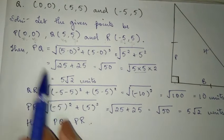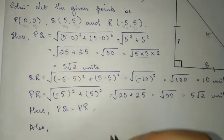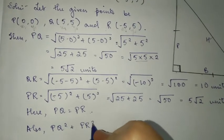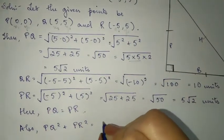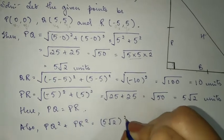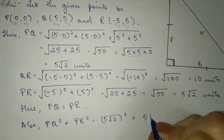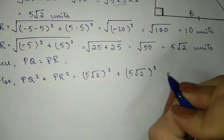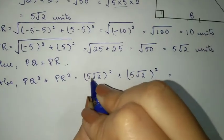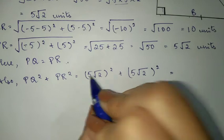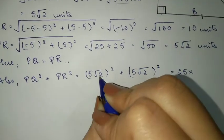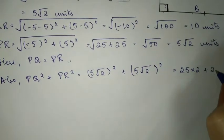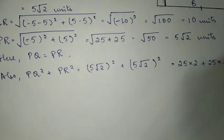So to prove this, PQ and PR sides are equal. Let's square them. PQ square plus PR square. PQ is 5 root 2 and PR is also 5 root 2. When we square, 5 squared is 25 and root 2 squared is 2. So 25 into 2 plus 25 into 2.